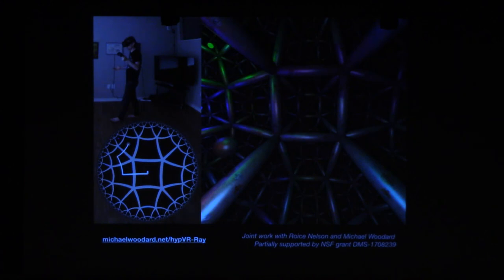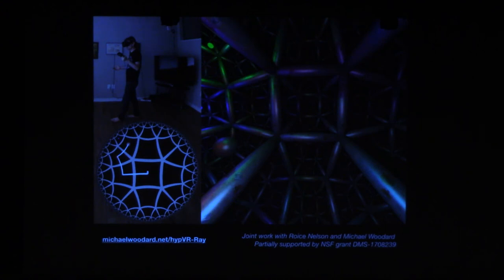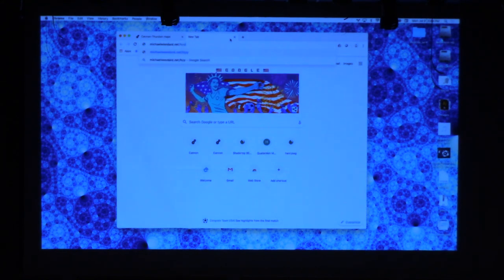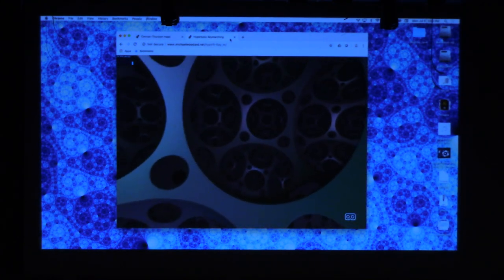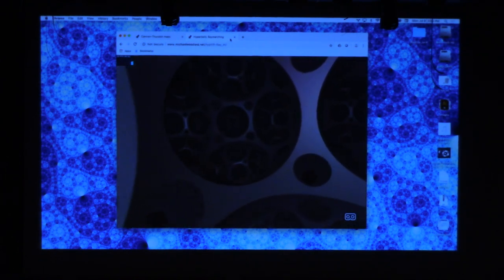There's an ICERM semester coming up next semester that I'm one of the organizers for, on illustrating mathematics. One of the things we're going to try and do is make all the other eight Thurston geometries — maybe skipping the Euclidean one since that's been done. You can go to this address on your phone — the mobile version runs faster, as these simulations are pretty heavy on the graphics card.